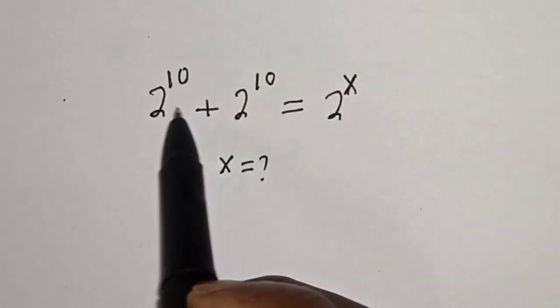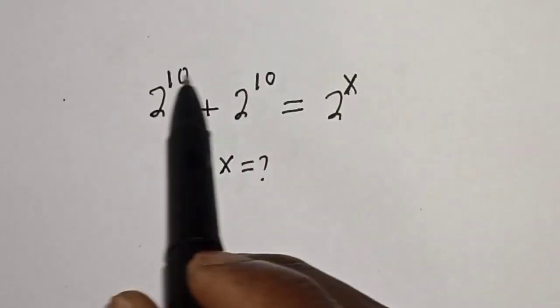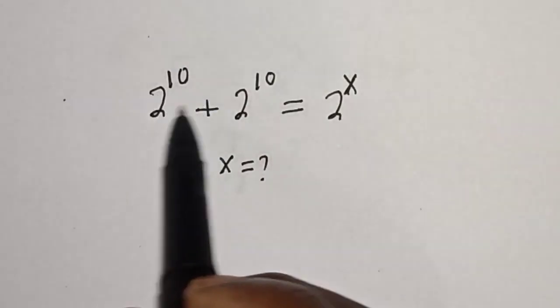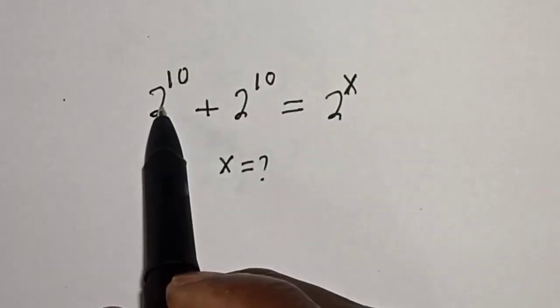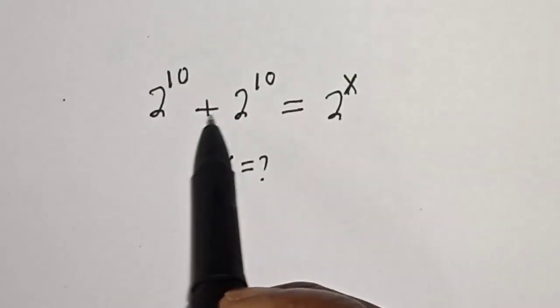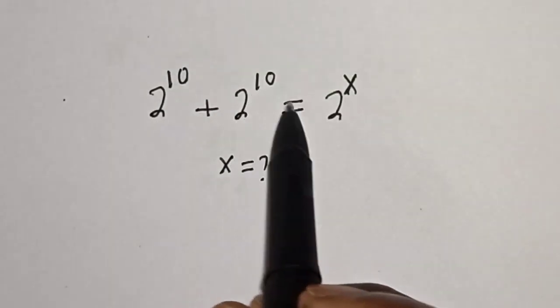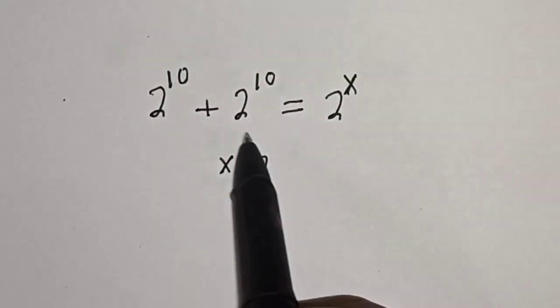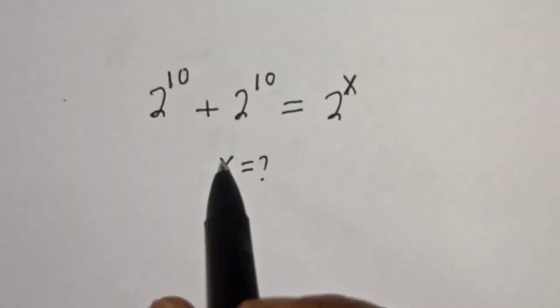Hello, welcome to Magis. In this class I want to find the value of x from this equation: 2 raised to power 10 plus 2 raised to power 10 is equal to 2 raised to power x.